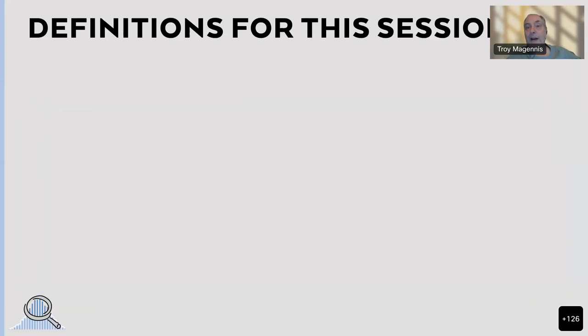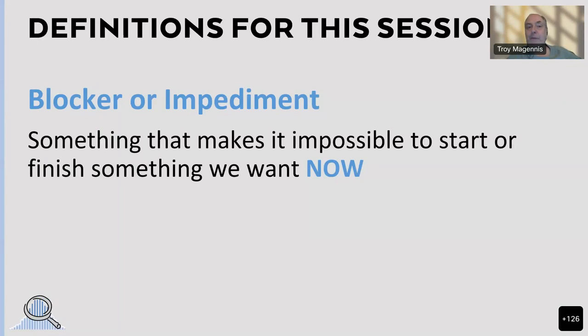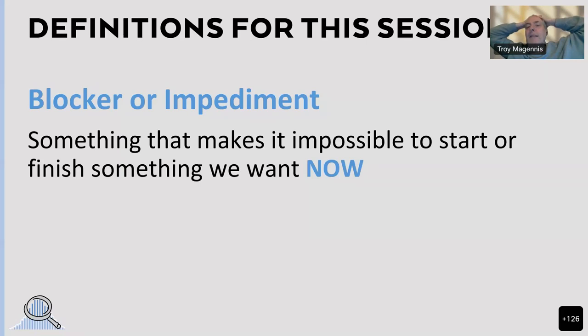All of these are valid types of dependencies in the agile world. Just re-organizing or cross-training teams only really solves one of these. If we view dependency management as just an organizational problem, we'll miss many reasons why work needlessly sits idle. We need to broaden our definition. A blocker or impediment is something that makes it impossible to start or finish something we want now. If we have Kanban boards or scrum boards, often the question at stand-up is 'are you blocked?' And we used to put red sticky notes on yellow sticky notes to flag blocked work.